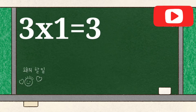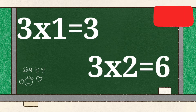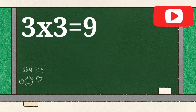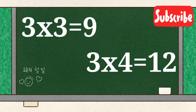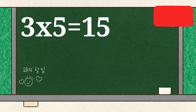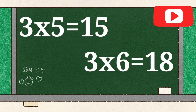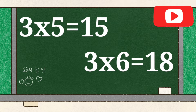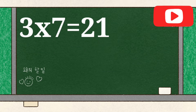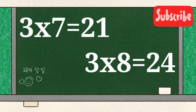3 1's are 3, 3 2's are 6, 3 3's are 9, 3 4's are 12, 3 5's are 15, 3 6's are 18, 3 7's are 21,